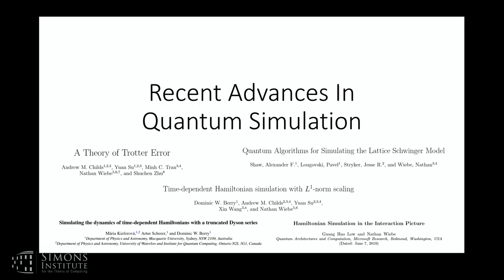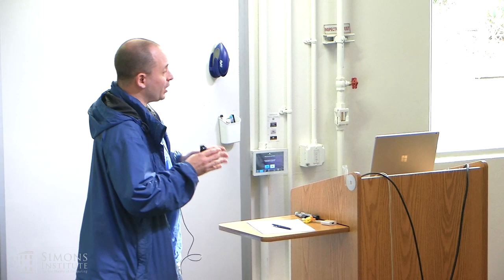Simulation of Hamiltonians — people always think this is just for chemistry, that's all these applications are set up for. The right way to think about Hamiltonian simulation is as a compilation paradigm. It says: for cases where you want to implement a unitary matrix, but you only know that unitary matrix as an exponential of a Hermitian matrix, this tells you how to compile that into a sequence of gates.